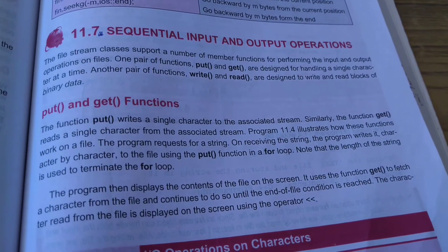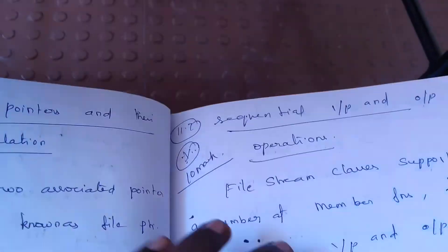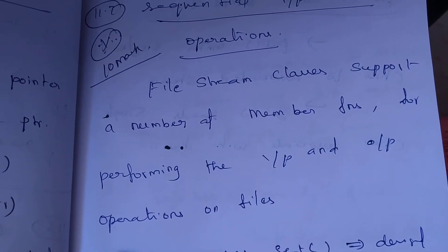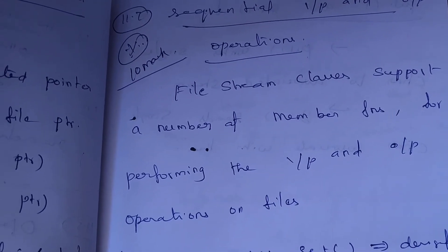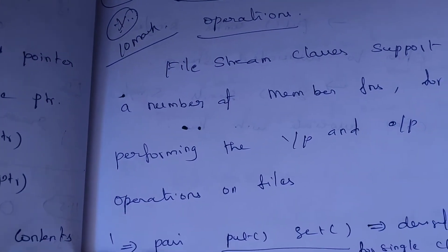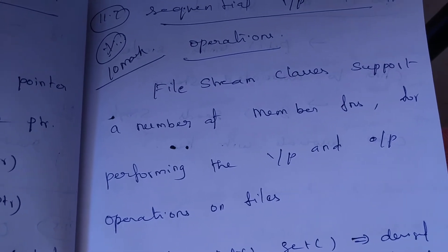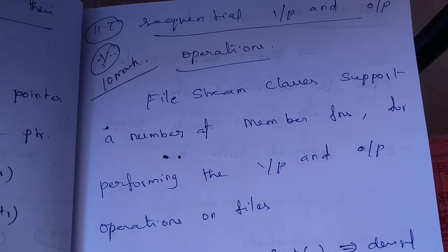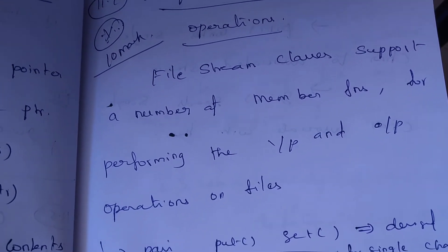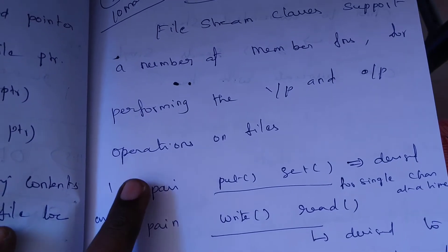Sequential input/output operations are defined in C++. The file stream classes support a number of member functions for performing input/output operations on a file.